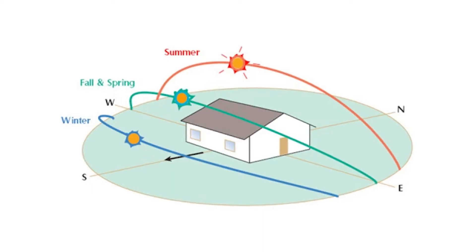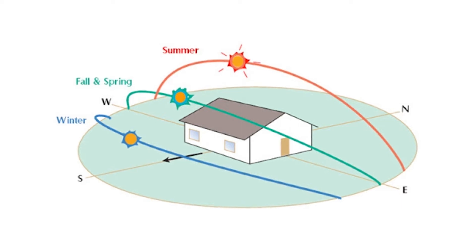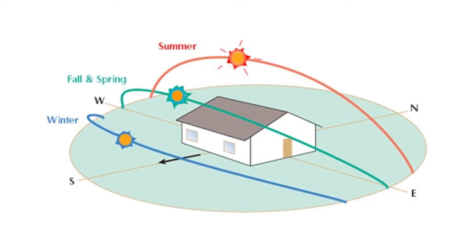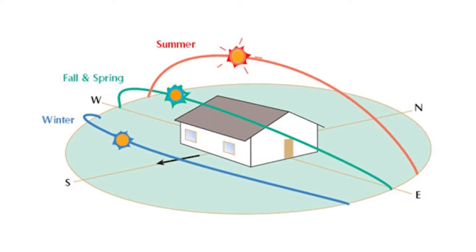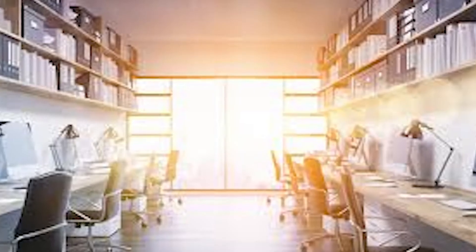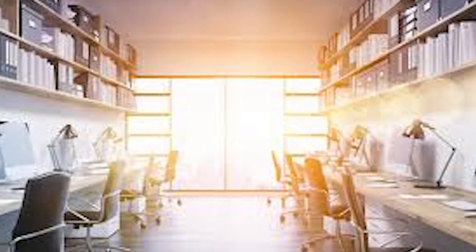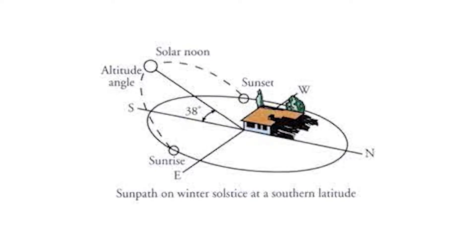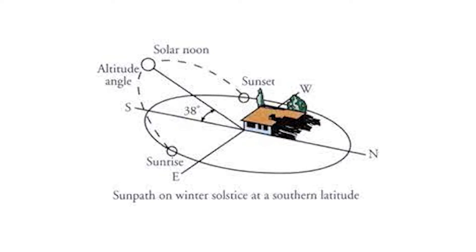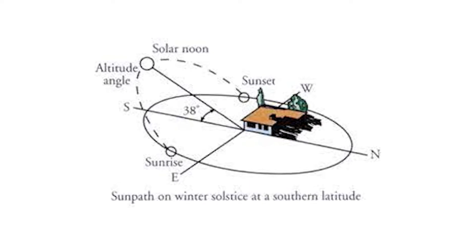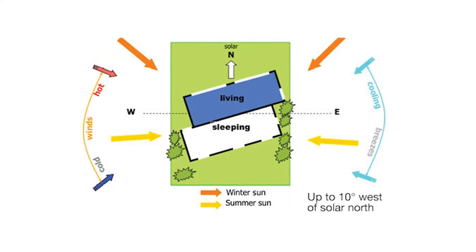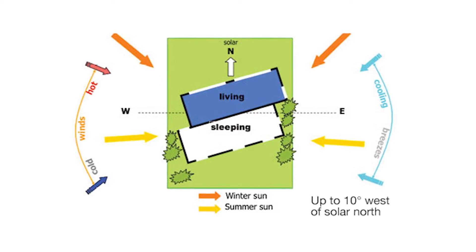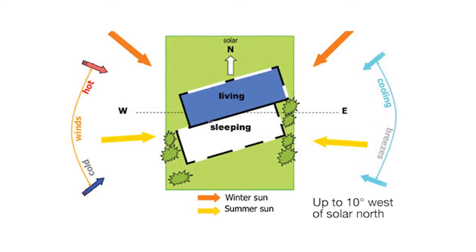If you live in the northern hemisphere like me, your most southern-facing windows will receive the most light, and your northern-facing windows will receive the least. Your east-facing windows will receive the most glare in the morning when the sun is low in the sky, and your west-facing windows will receive the most glare in the evenings. This is all due to the earth spinning on its axis in relation to the sun, and definitely something you want to keep in mind when designing or orienting your tiny house.